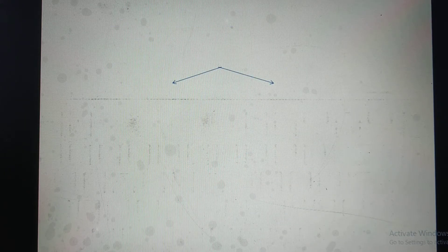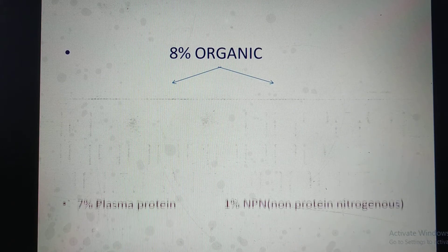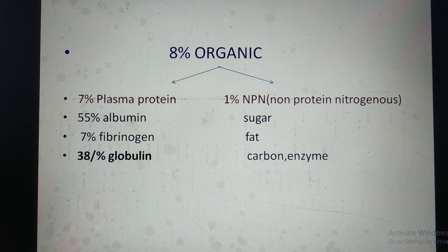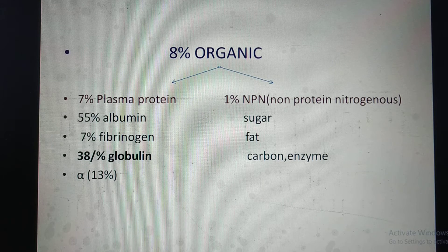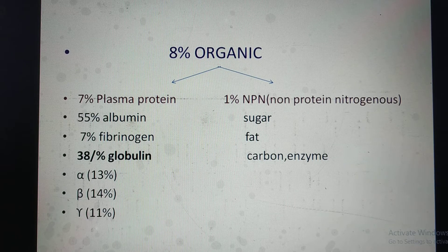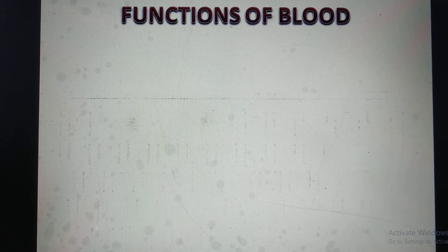The 8% organic substances contain 7% plasma protein and 1% NPN (non-protein nitrogen substances). The 7% plasma protein contains 55% albumin, 7% fibrinogen, and 38% globulin. Globulin also contains 3 types: alpha 13%, beta 14%, and gamma 11%. The 1% NPN contains sugar, fat, carbon, and enzymes.